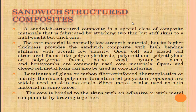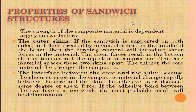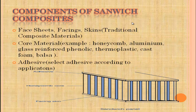Open and closed cell metal foam can also be used as core materials. Laminates of glass or carbon fiber reinforced thermoplastics, or mainly thermoset polymers such as unsaturated polyesters, are widely used as skin materials. Sheet metal is also used as a skin material in some cases. The core is bonded to the skin with an adhesive, or with metal components by brazing. Components of sandwich composites include face sheets, facing skins, traditional composite materials, core materials such as honeycomb and aluminum glass reinforced, and adhesive according to application.